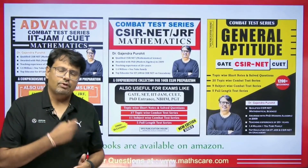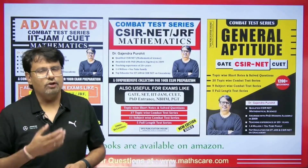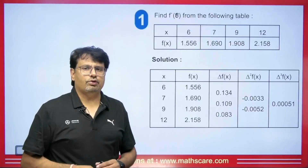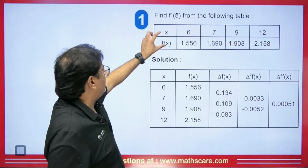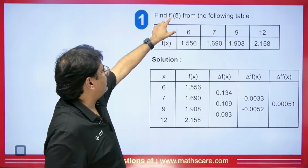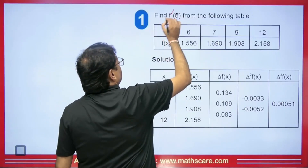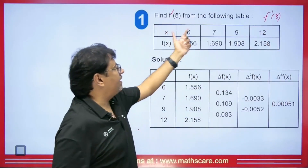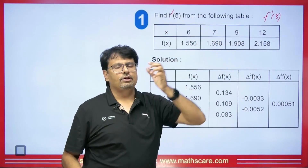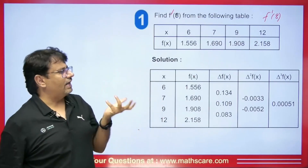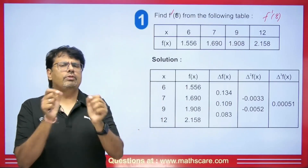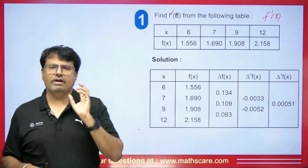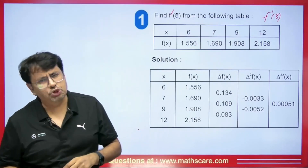Students, our books are available on Amazon and Flipkart — they are very helpful for CSIR NET, GATE, and IIT JAM exams. We will see the next question. We are given data of x and f(x), and we are told to find the value of f'(8). The intervals given here are unequal, so we will use Newton divided difference or Lagrange. Newton divided difference is easier, so we will use that.